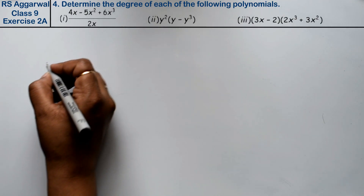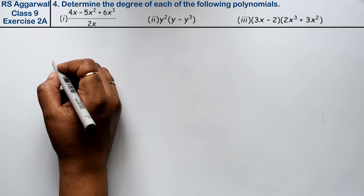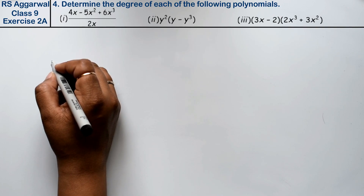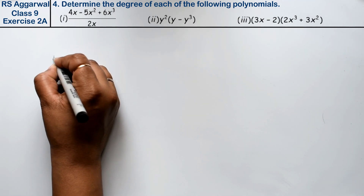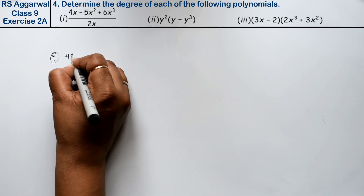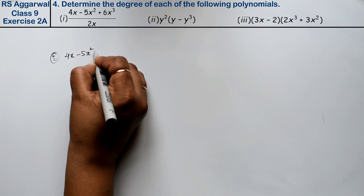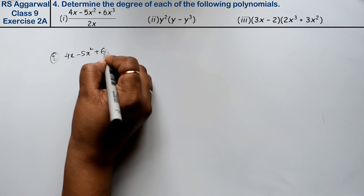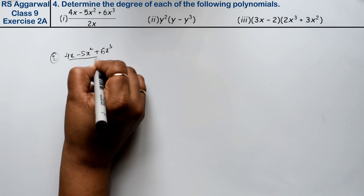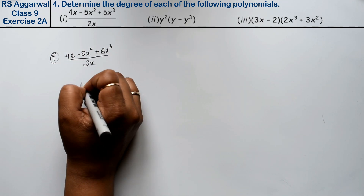Let's do question number four of exercise 2a, that is polynomials. Question number four is: determine the degree of each of the following polynomials. First part is (4x minus 5x squared plus 6x cubed) upon 2x. We need to find the degree.